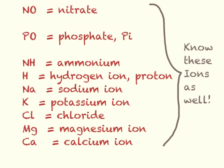It's a good idea to know these ions as well. Nitrate has a single negative charge and three oxygens. Phosphate has four oxygens and is minus three. Ammonium is positive with four hydrogens. Hydrogen ion is positive — we often call it just a proton. Sodium ion is positive, potassium ion is positive, chloride ion is negative, and magnesium and calcium both have two-plus charges.